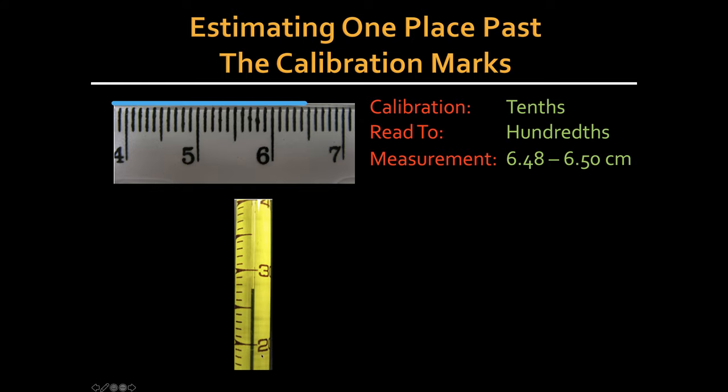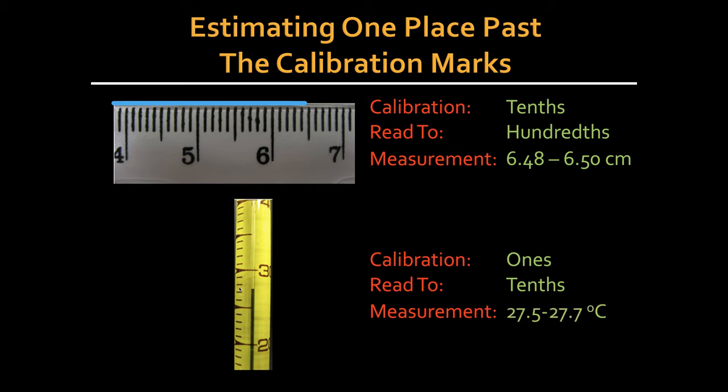For this measuring device, this is the tenths place. And this right here is the ones place. So what you do is you estimate one place smaller than the ones place, which would be the tenths place. The measurement therefore would be 27. Well, it's a little less than halfway between 27 and 28. So 27.5 to 27.7 would be appropriate. 27.9 would not be appropriate.